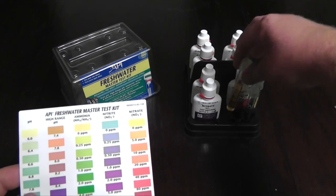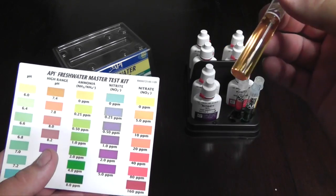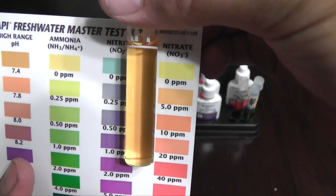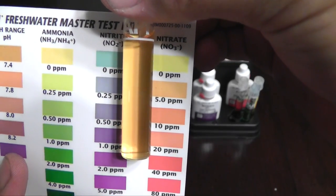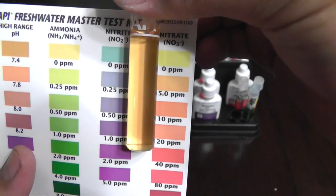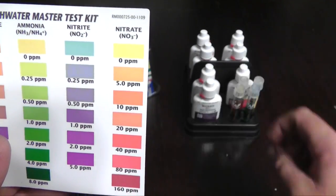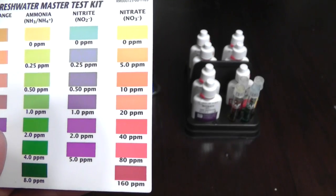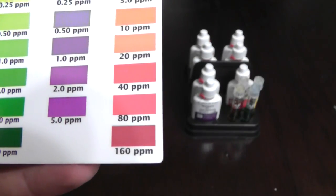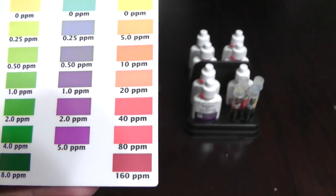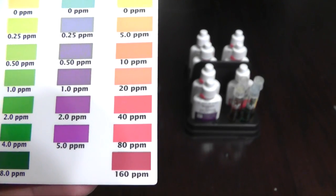Now this one right here is the nitrates. And as you can tell, my nitrates are running at around five parts per million or 10 parts per million. So that's good. You don't want a lot of nitrates in your tank. And if you have a lot of nitrates in your tank, let's say 160 parts per million, I would say immediately do a water change. And if you want to know how to do a water change, I have another video on that.